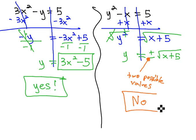To be a function, you can only have one possible value when we solve for y, like we did in the first equation.